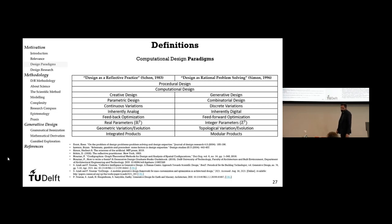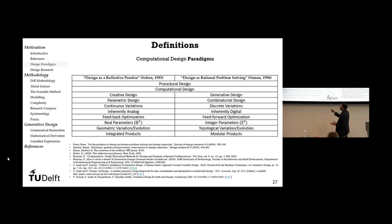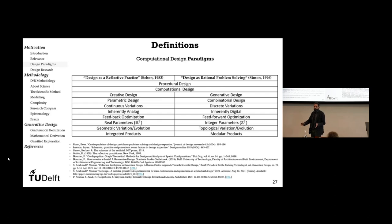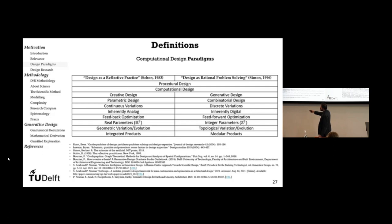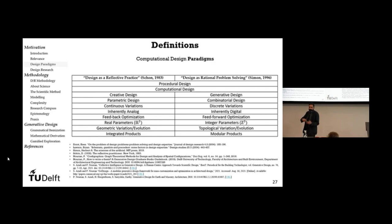We view design as a matter of combinatorial generation of alternatives — something I usually compare to composing on the piano: it's a combinatorial composition with discrete notes that you combine together to arrive at a new creation. The other approach — more parametric or continuous — I compare to composing on the violin, where you're dealing with continuous variations. In our approach, we deal with discrete variations.